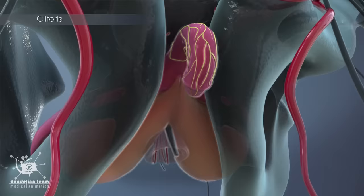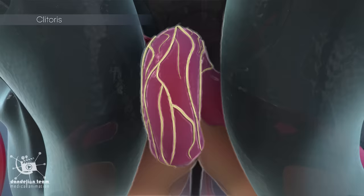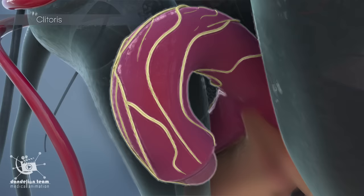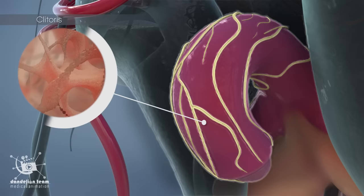In females, the clitoris is a small sensitive organ located at the top of the genital cleft. There are thousands of nerve endings here. The clitoris consists of erectile tissue that fills with blood and expands when stimulated. This erectile tissue is similar to the tissue in the penis.